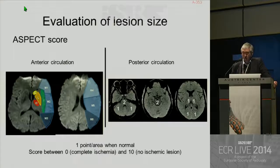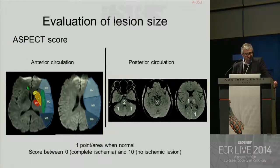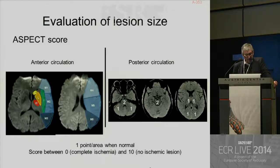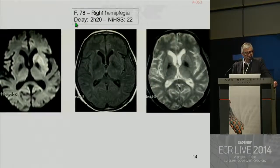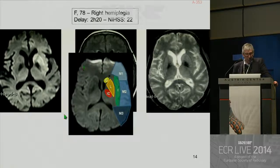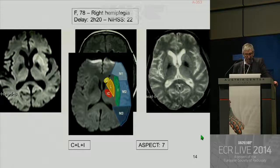Another point is evaluation of lesion size. You can evaluate the lesion size with the ASPECTS score. It was initially developed for CT imaging but is now also available for MRI. You have the definition of areas in the anterior circulation. The score is 10 minus the number of areas with ischemic lesion. You lose one point per area with ischemic lesion. For example, here with right hemiplegia at two hours 20 minutes, a lesion in the caudate, lenticular nucleus, and insula gives an ASPECTS score of seven.